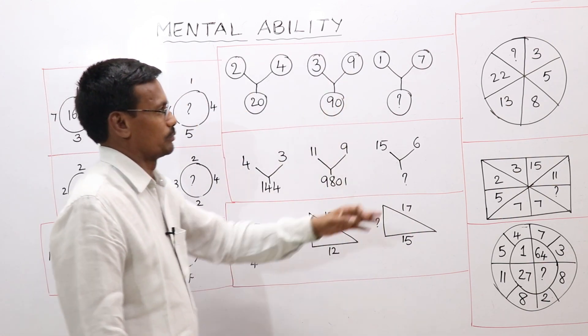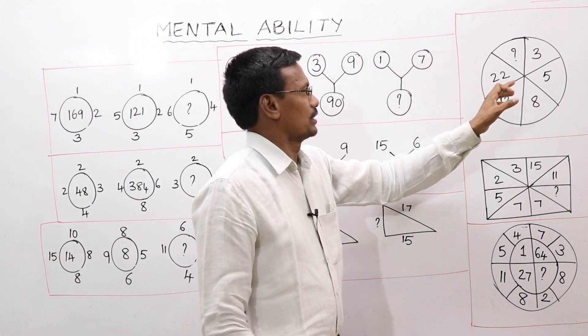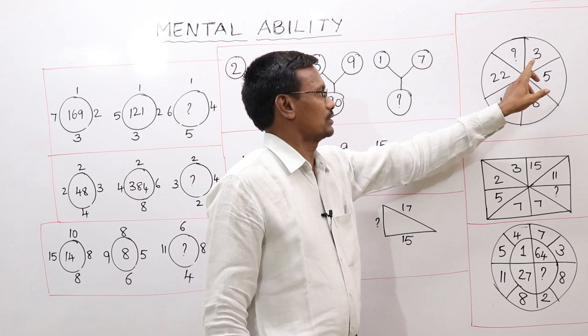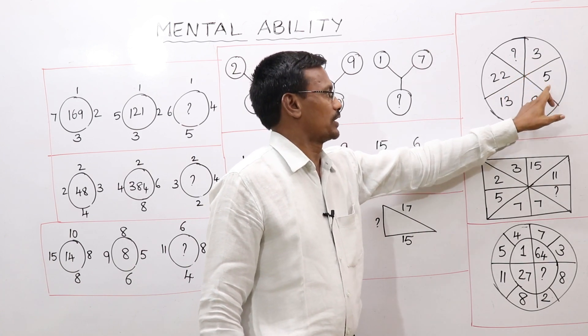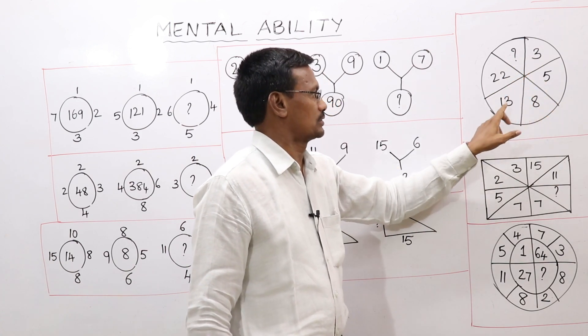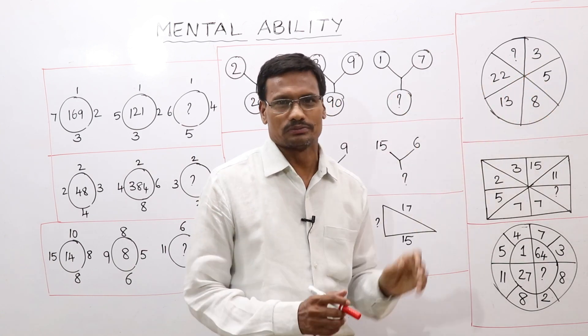Question number 1. We have the series: 3, 5, 8, 13, 22. We need to find the next term.